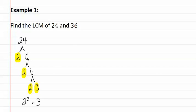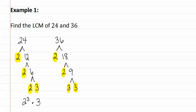Now, let's find it for 36. 36 divides to 2 and 18, 18 is 2 times 9, and 9 is 3 times 3. Once again, we highlight all of the prime factors of 36. Remembering that if there is more than one number, we write it using exponents. Since we have two twos, we write it as two squared. Since we have two threes, we write it as three squared.